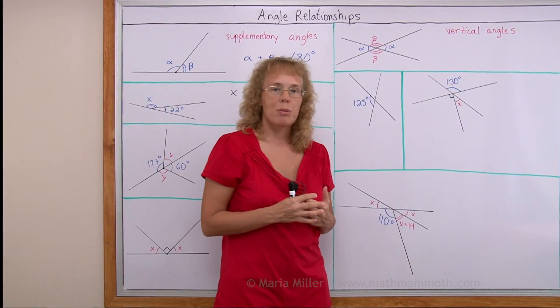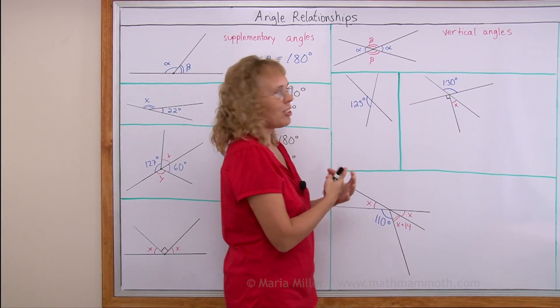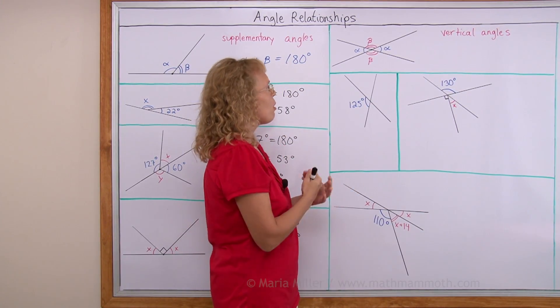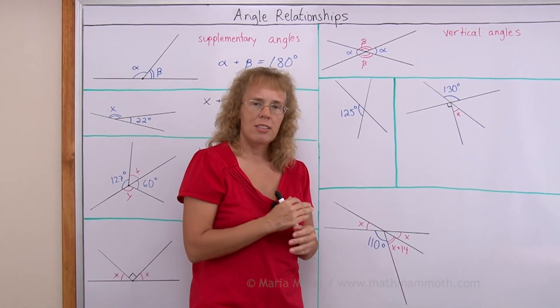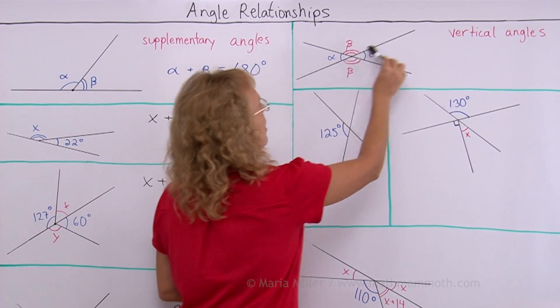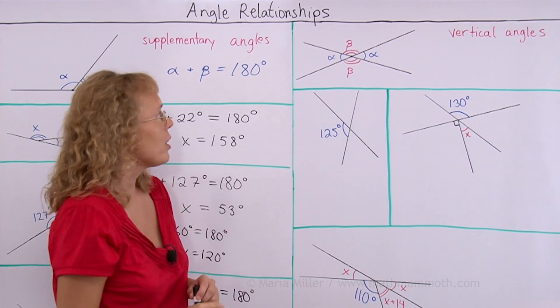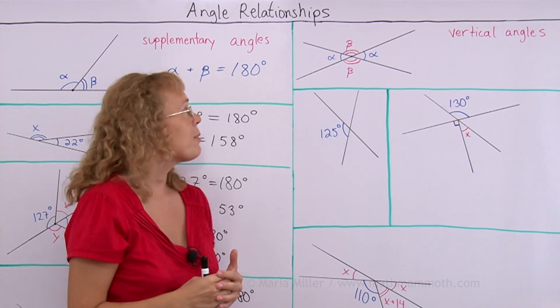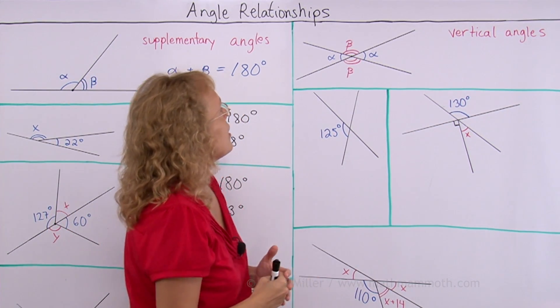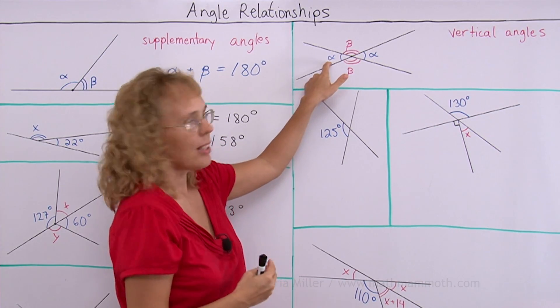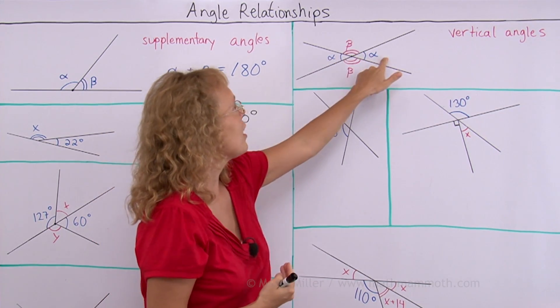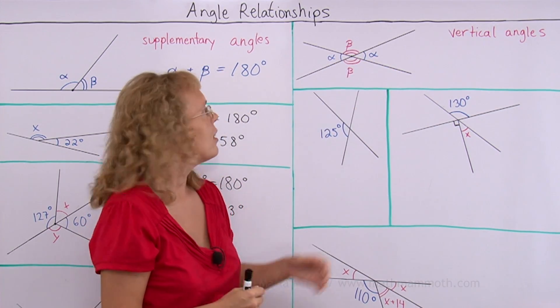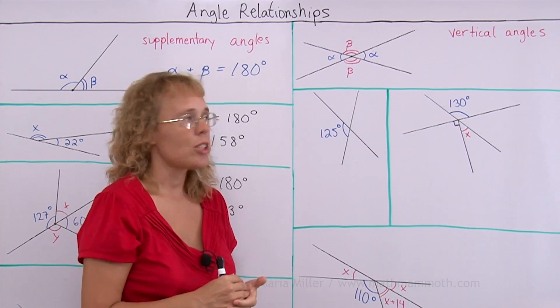Another important relationship with angles is vertical angles. And those are formed always when you have two lines that intersect each other. There's this line here and this line. They intersect at that one point and four angles are formed there. And this is the Greek letter alpha by the way. Alpha and alpha are equal. So there's two angles that are the same. They have the same angle measure.